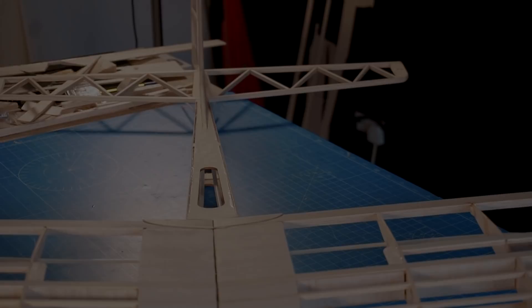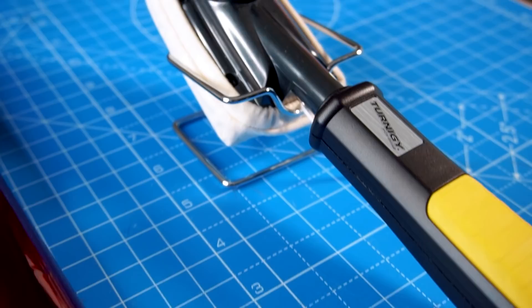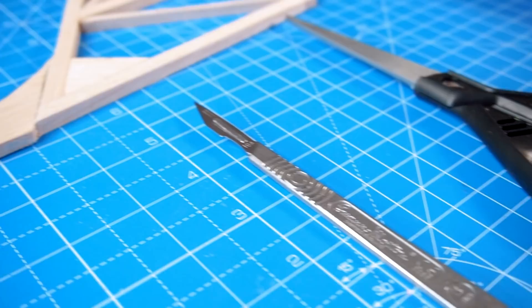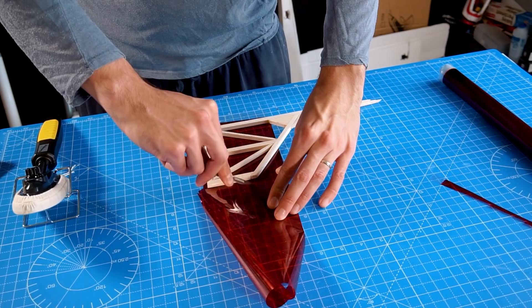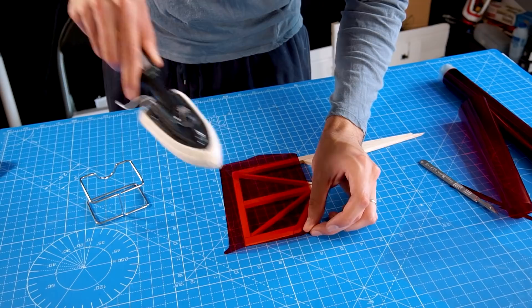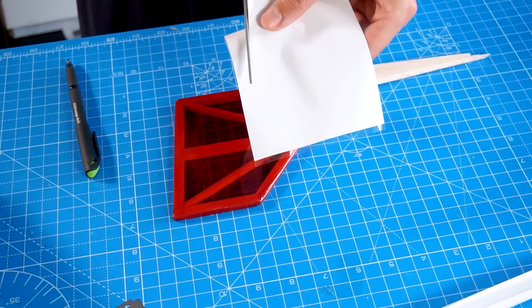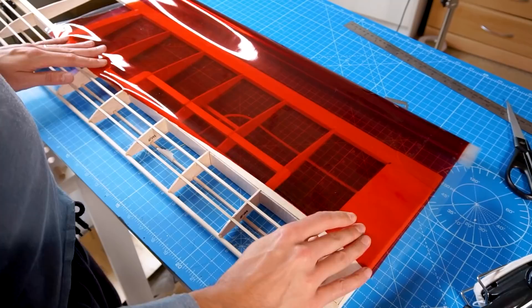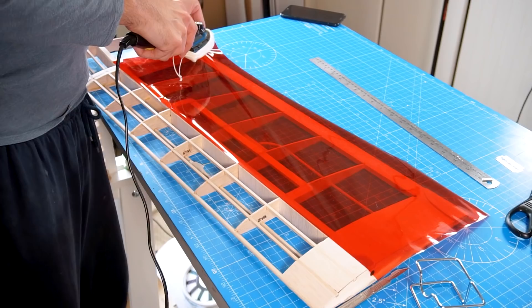Now I'm going to start with the covering process. For that I need a special tool which is the iron—this iron is especially designed for this application, but if you don't have one you can use a common iron, though it's bulky and uncomfortable. I'm going to start covering the smaller and easier parts, starting with the vertical stabilizer, then the rudder. That's a way to practice and see how the material behaves so you don't mess the bigger parts like the wings.